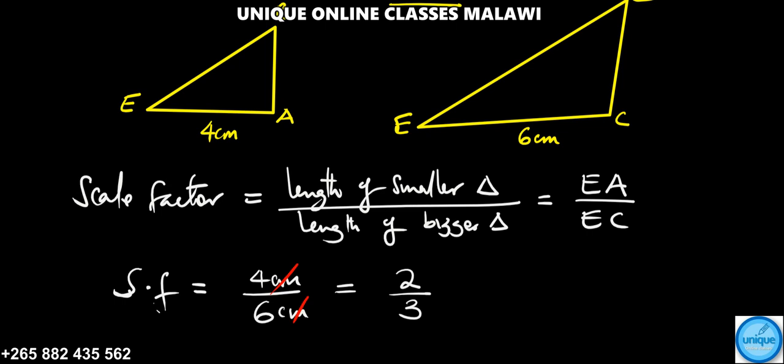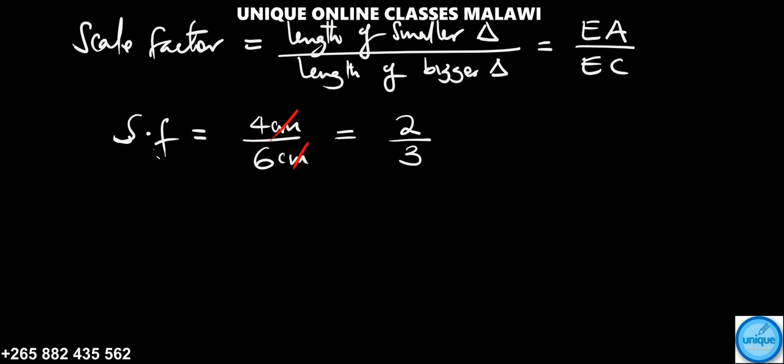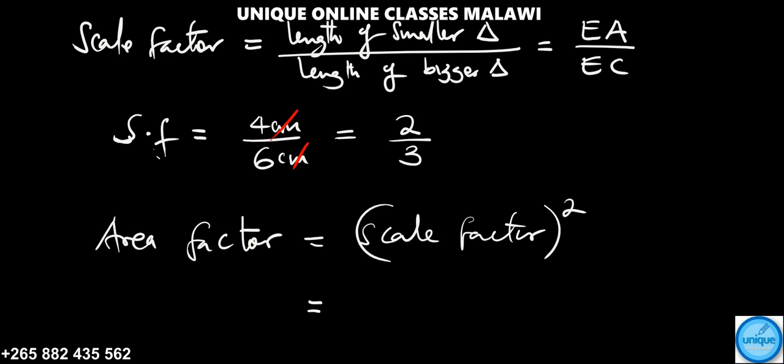Since we have been asked to find the area, we're going to change this scale factor to area factor. So to change the scale factor to area factor, the relationship is area factor from scale factor, just a matter of squaring the scale factor. So we have scale factor squared. So our scale factor is 2/3. So if we square this, 2 squared is 4, and 3 squared is 9. It means our area factor is 4/9.